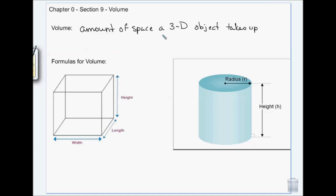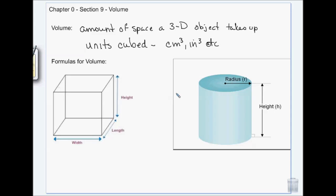Volume is the amount of space a three-dimensional object occupies or takes up. You're used to thinking of volume as the amount of liquid that fills a container. Volume is in units cubed — so centimeters cubed, inches cubed, etc. This shape is known as a rectangular prism.